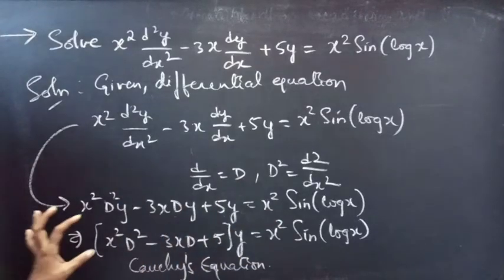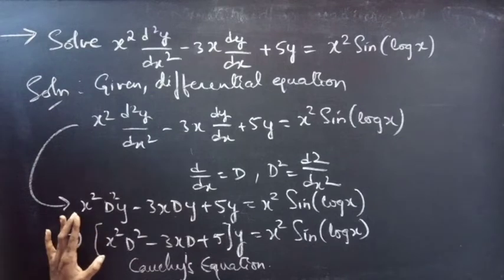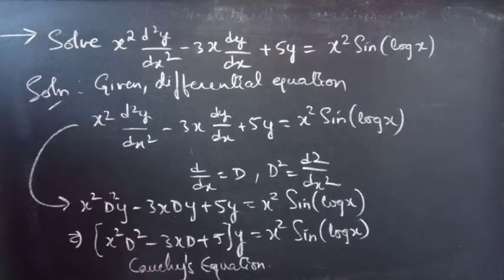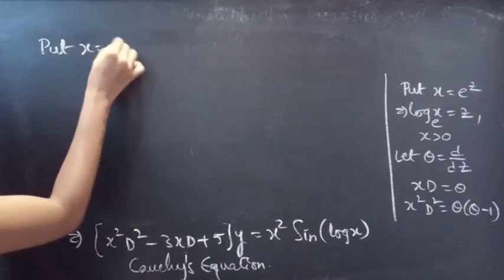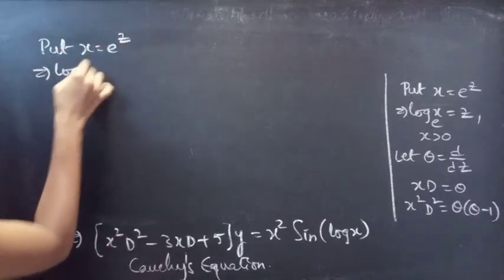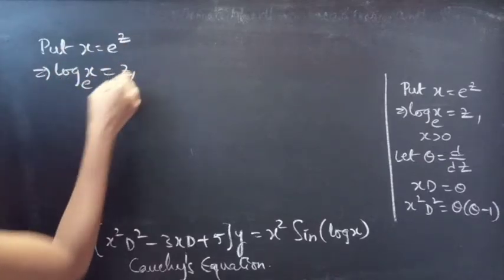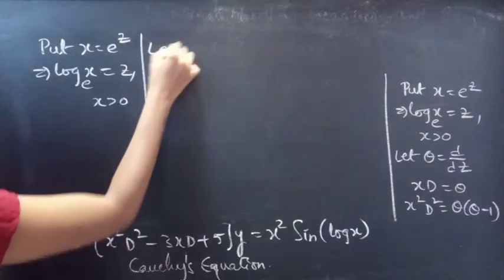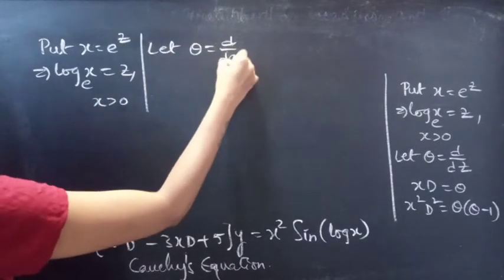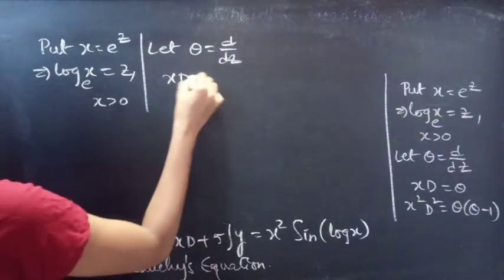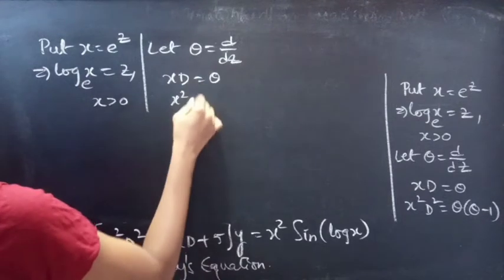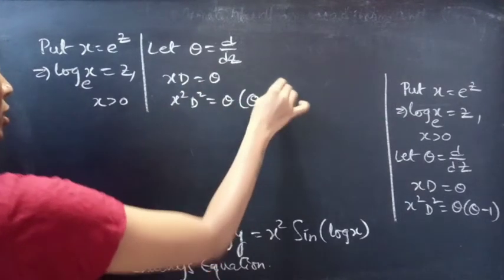Now we'll reduce this equation to one with constant coefficients. We'll reduce this from variable coefficients to constant coefficients by making a simple substitution. Put x equals e^z, then log x (base e) equals z for x greater than 0, and let θ equals d/dz. Here θ is a differential operator with independent variable z. And xD equals θ, and x²D² equals θ(θ minus 1).